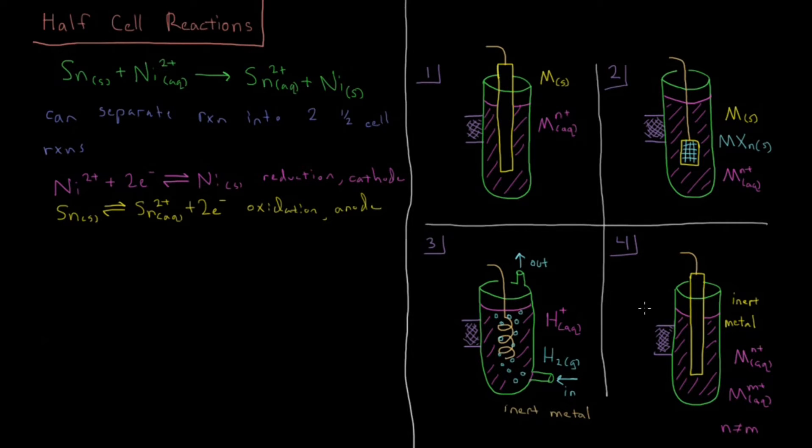But there are really four main types of half cells that we want to talk about which are going to give us an indication of what the large majority of half cells are that we're going to see. So going through these one through four.